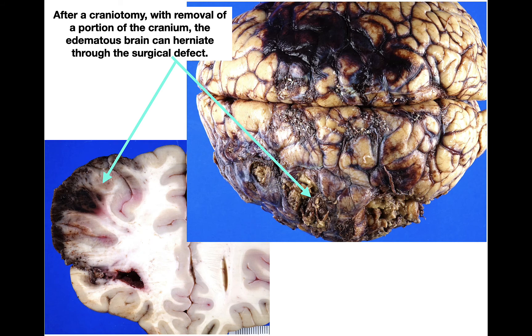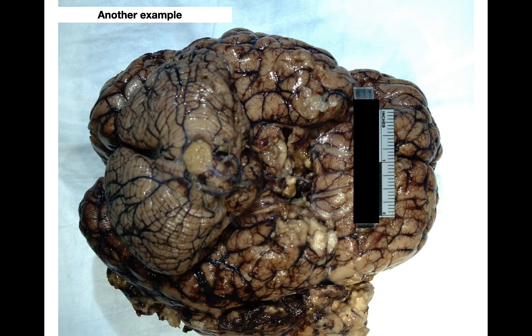Yes, there is a fourth type of herniation. After a craniotomy with removal of a portion of the cranium, the edematous brain can herniate through the surgical defect. On the left side of the image, the brain bulges out where it's infarcted and hemorrhagic. This was an individual who had a craniotomy but did not survive. Another example looking down at the inferior surface shows brain matter jutting out the side — herniation through the cranial defect, sometimes called a mushroom herniation.